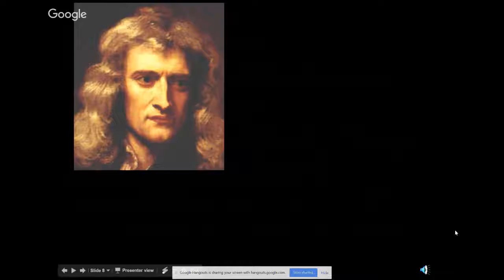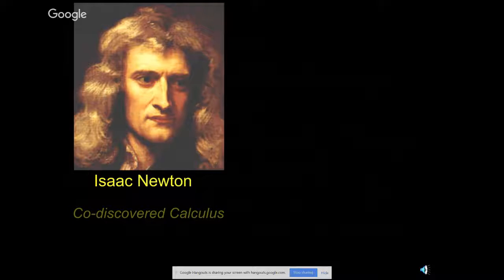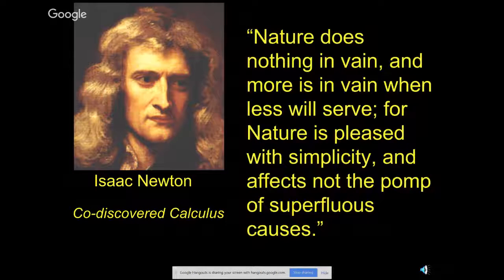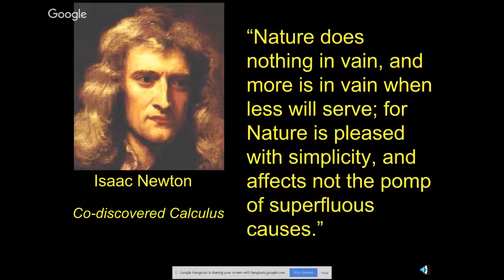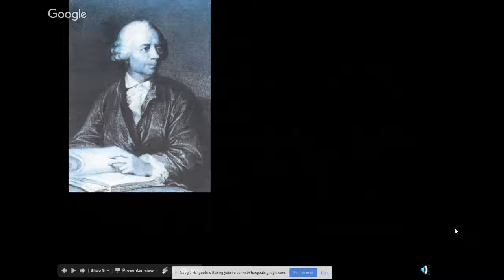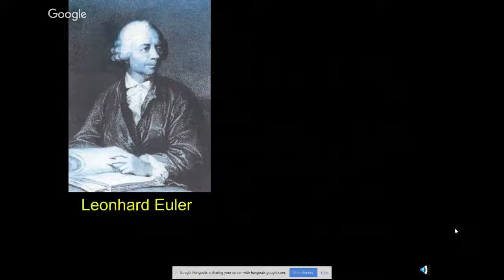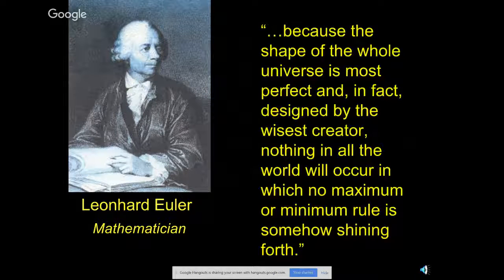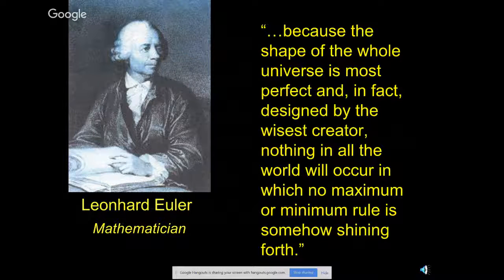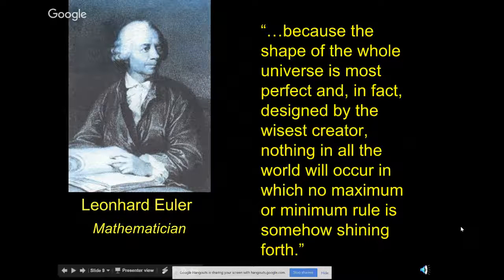This was said a little differently by this French mathematician, who said 'Nature always operates with the greatest possible economy.' One of the discoverers of calculus, Isaac Newton, said it this way: 'Nature does nothing in vain, and more is in vain when less will serve, for nature is pleased with simplicity and affects not the pomp of superfluous causes.' No waste — very efficient. And another Christian mathematician, Leonard Euler, said: 'Because the shape of the whole universe is most perfect and in fact designed by the wisest Creator, nothing in all the world will occur in which no maximum or minimum rule is somehow shining forth.'